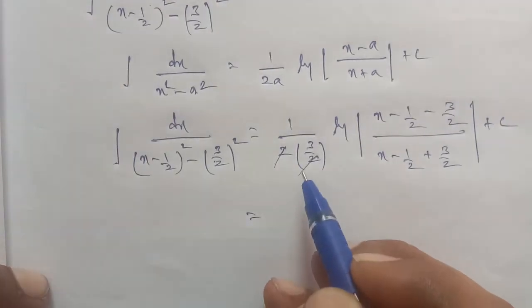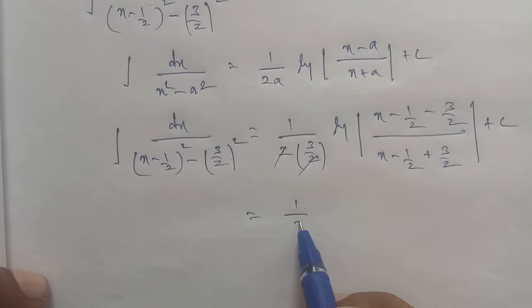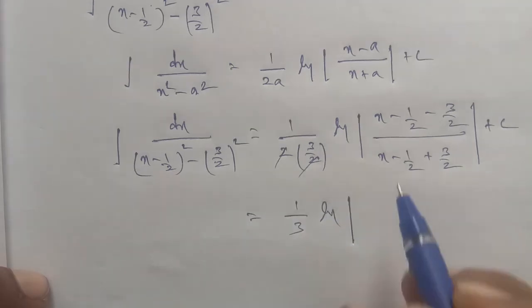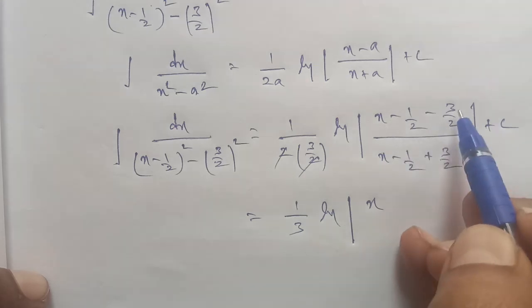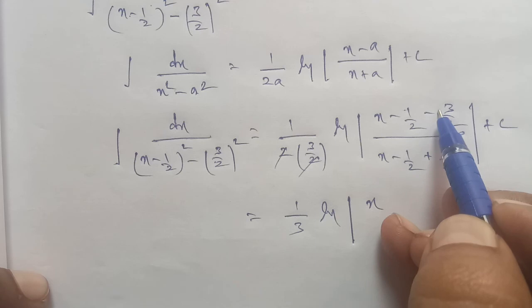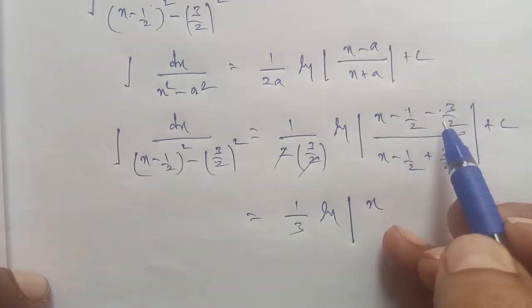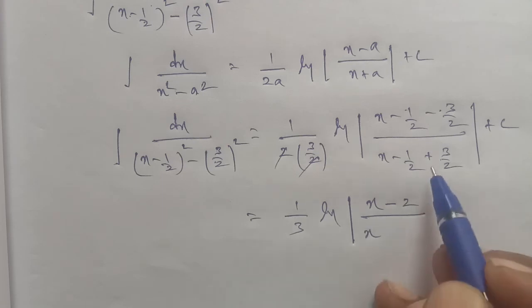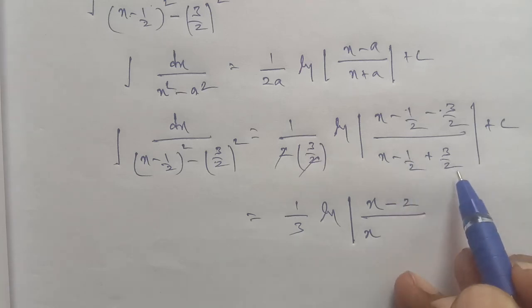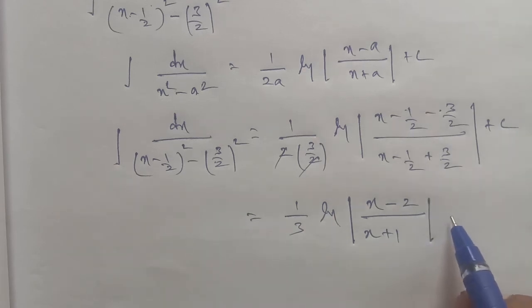The 2s cancel, so remaining is 1 by 3 log. x minus 1/2 minus 3/2 equals minus 4/2 equals x minus 2. And x minus 1/2 plus 3/2 equals 2/2 equals x plus 1. So the answer is 1/3 log (x minus 2)/(x plus 1) plus c.